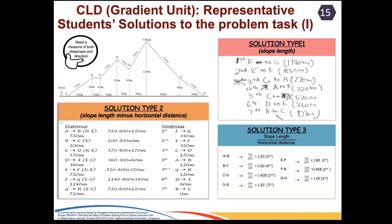Due to time constraints, I will show the solutions and representations provided by students in the implementation with Secondary One students of various profiles. We found that five categories of responses surfaced. Type one are those that consider only one variable or dimension when addressing either stiffness or direction. Type two are those that consider a combination of two dimensions of variables when addressing both stiffness and direction of the tri-section. Type three are those that consider a ratio of two dimensions or variables when addressing the stiffness and direction of the tri-section.